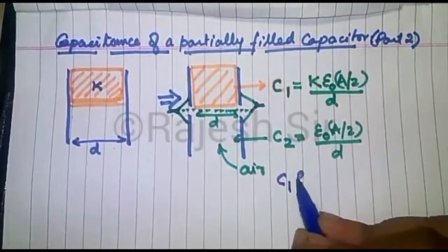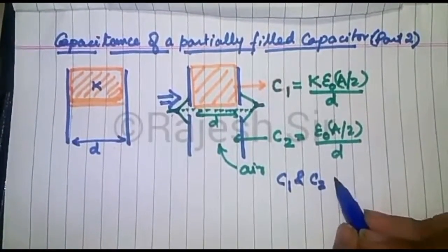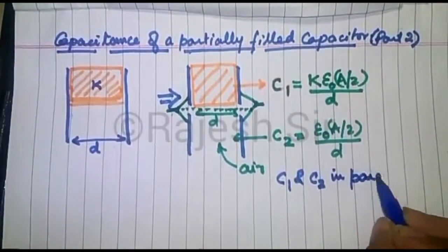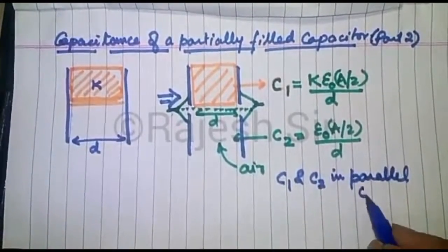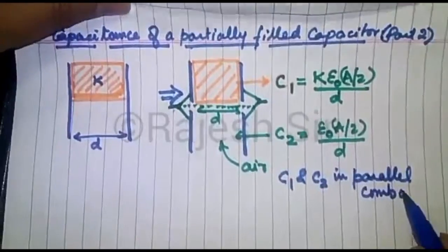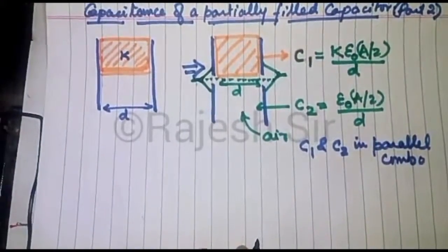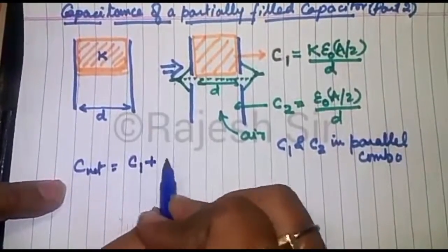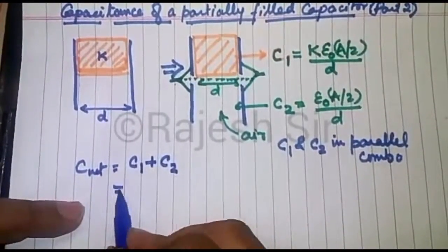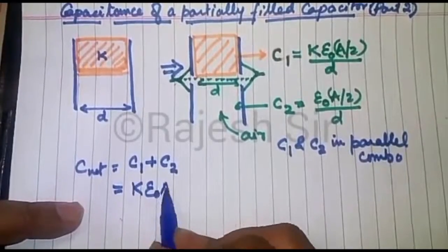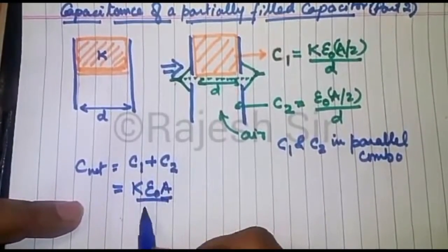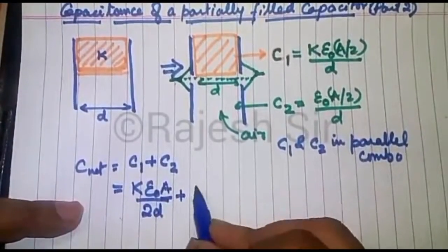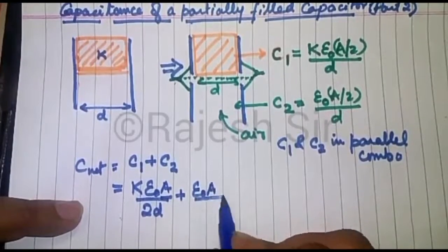So here what you would observe is that C1 and C2 happen to be in parallel combo. So the net capacitance will be simply the sum of C1 plus C2. Now how much is C1? K epsilon naught A by 2d. What is C2? That is epsilon naught A by 2d.